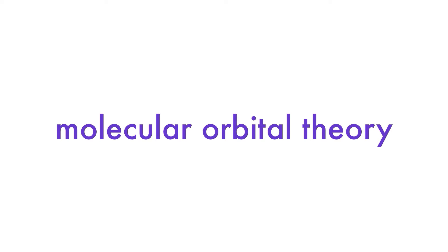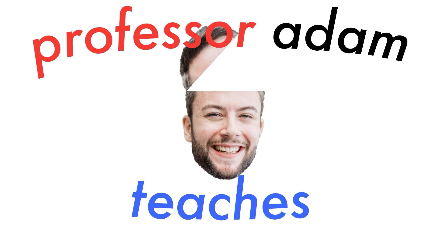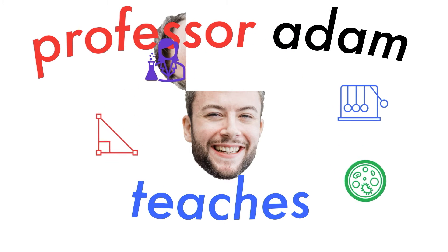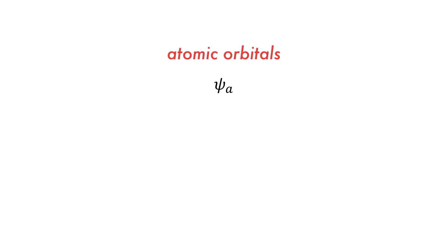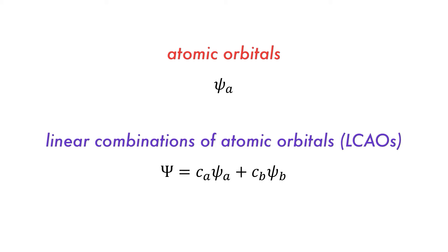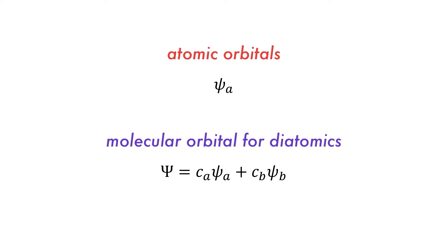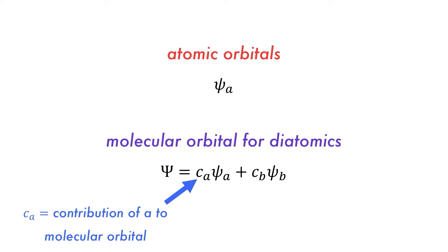Hello, it's Professor Adam. Let's talk about how molecular orbitals are formed. We previously learned about atomic orbitals and how they could be combined to form linear combinations of atomic orbitals, or molecular orbitals, which can be expressed using this equation where Ca is the contribution of the atomic orbital to that specific molecular orbital.